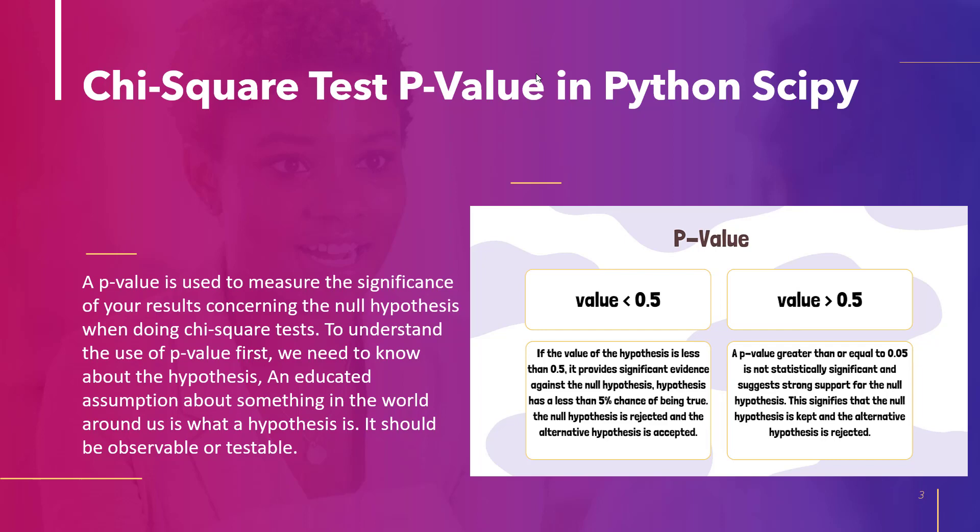A p-value of more than 0.05 is not statistically significant — it indicates strong support for the null hypothesis, so the null hypothesis is retained while the alternate hypothesis is rejected. When we perform the chi-square test, it returns the result as a p-value that we can use to make a decision whether we should accept or reject the hypothesis.